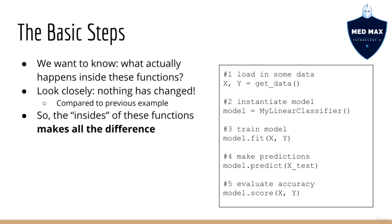For classification, this score returns the classification accuracy. And just to reiterate, this lecture is all about answering the question, what actually happens inside these functions? This question is really important to answer because you'll notice that, if you compare this to linear regression, literally nothing has changed, except for the name of the class. So really, what happens inside these functions makes all the difference. It's what really matters if you want to know how this stuff actually works.